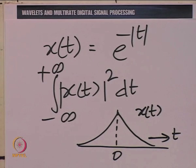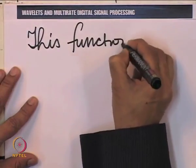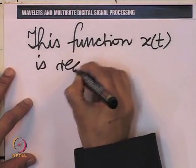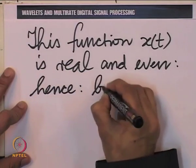It is obvious that x(t) is symmetric about t = 0, so it is a real and even function in time. A real and even function in time has a real and even Fourier transform too. Therefore, this function is both time and frequency centered — it is symmetric about t = 0, and its Fourier transform is symmetric about omega = 0.